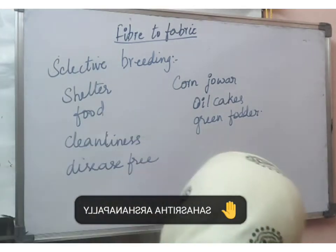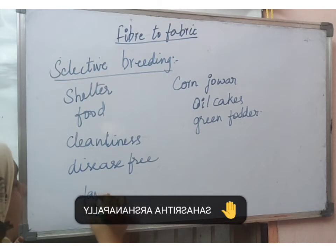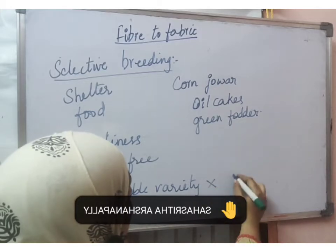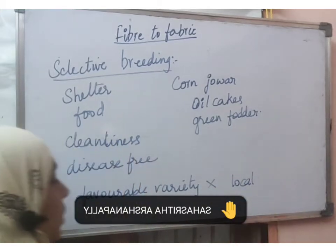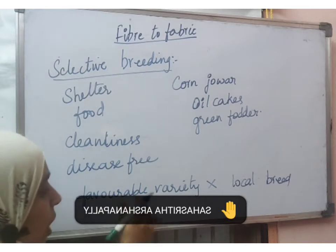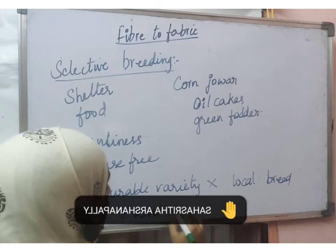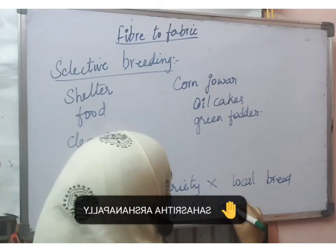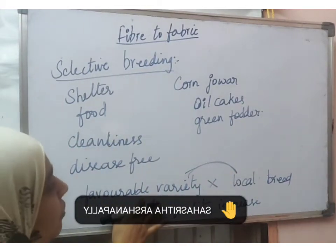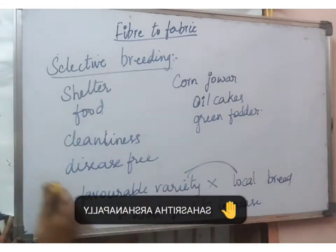Selective breeding means the favorable variety of sheep is taken and cross-bred with a local variety, or sometimes both parents are favorable varieties. The resultant will have the quality of both the desired animal and the local breed. The wool quality increases. This type of breeding of two selected animals is called selective breeding — we select the organism we need, breed it with a local variety, and wool quality increases.